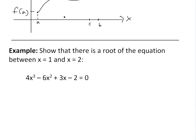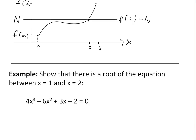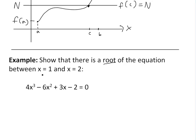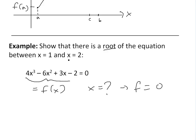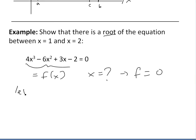Now we can apply this Intermediate Value Theorem to prove that a root exists for an equation. The example states that there is a root of the equation 4x³ − 6x² + 3x − 2 between x = 1 and x = 2. Remember, a root is just when you plug in x and the whole expression equals 0 — wherever y equals 0. We let this function equal f(x), and we set a = 1, b = 2, and n = 0.